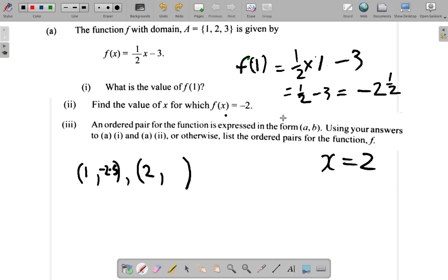F of x is negative 2 when x is 2, then f of x is negative 2. So you put negative 2 here. Remember, this is what you put in for x and this is what you get out for f of x. It's just that in part 2, you were not given x and then got out f of x.